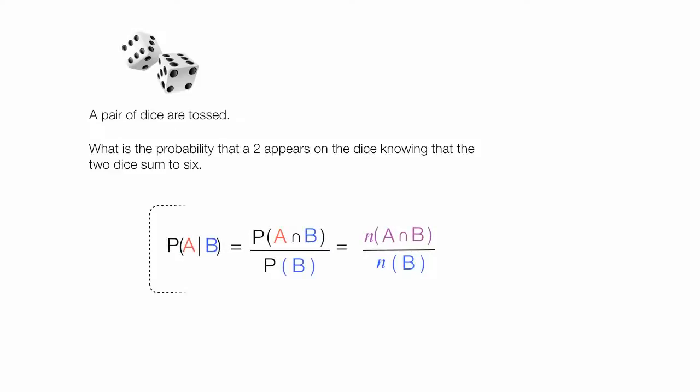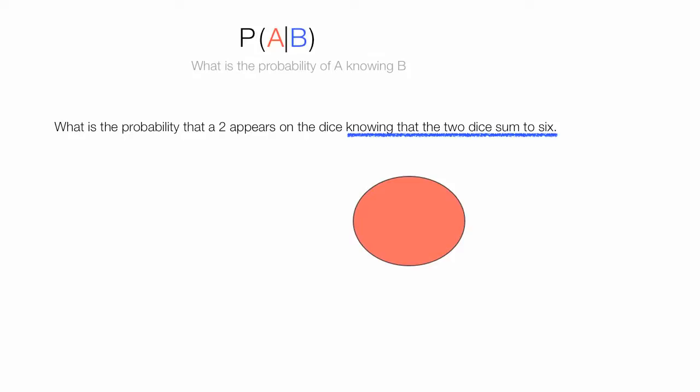The formal notation looks like this and I'm going to walk you through this step by step. What is the probability that a 2 appears on the dice knowing that the two dice sum to 6? I'm going to let this red oval be A and this blue rectangle be B. The intersection will be burgundy.